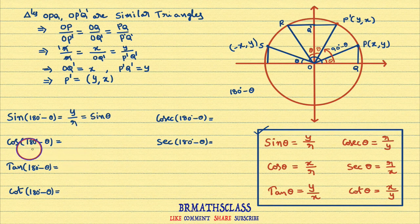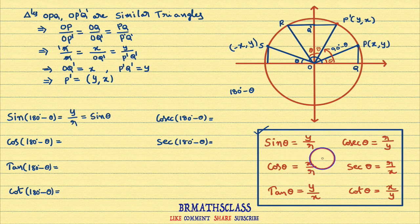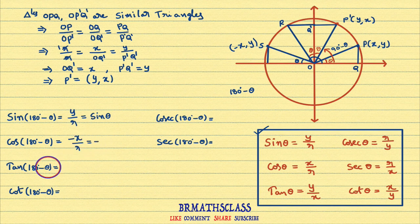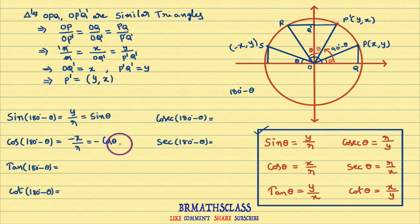Now, cos(180 degrees minus theta). As per the definition, cos theta is defined as x coordinate of the point divided by radius of the circle. The x coordinate of point S is minus x, so cos(180 degrees minus theta) equals minus x divided by r. Since x by r is cos theta, cos(180 degrees minus theta) equals minus cos theta.